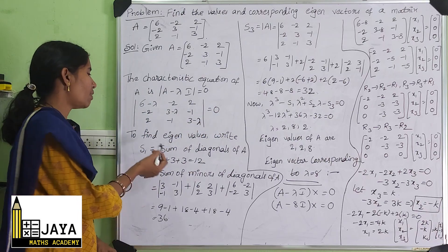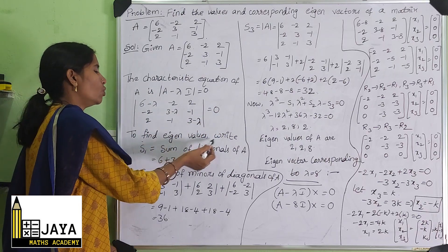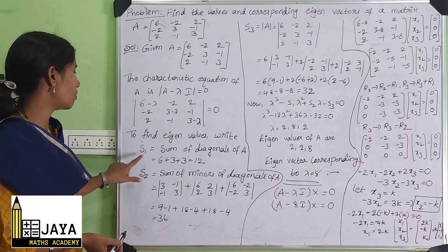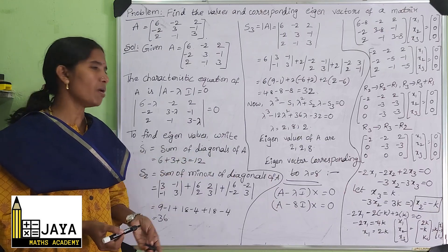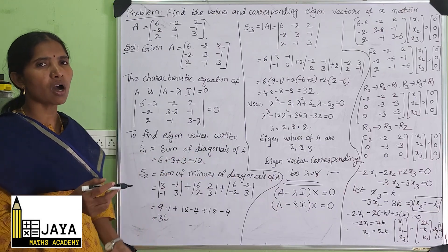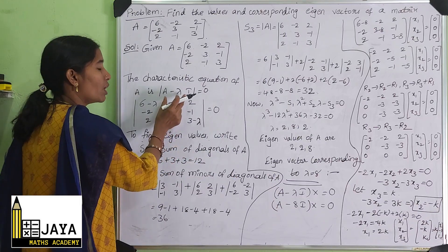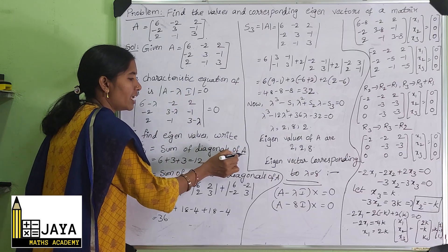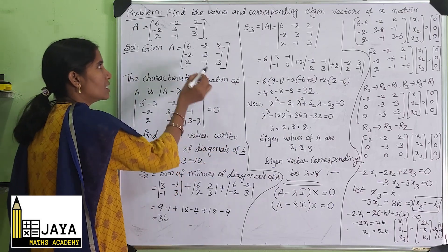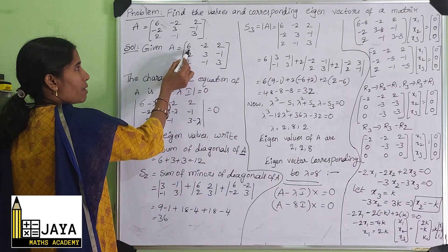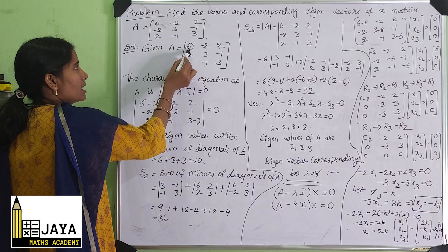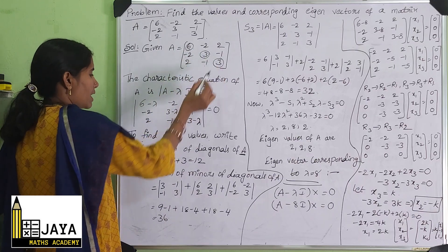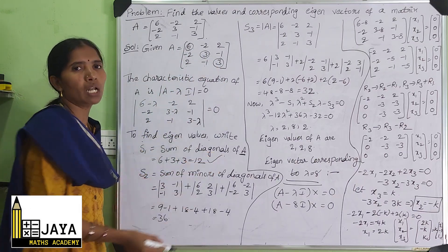To find the eigenvalues, we use the shortcut equation. S1 is equal to the sum of the diagonals of matrix A — not for det(A - λI), but for matrix A itself. The diagonal elements are 6, 3, 3, so S1 = 6 + 3 + 3 = 12.